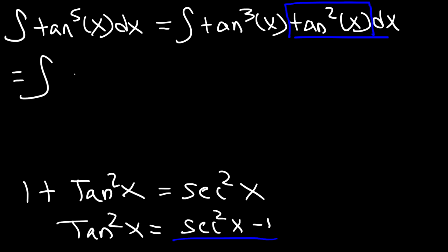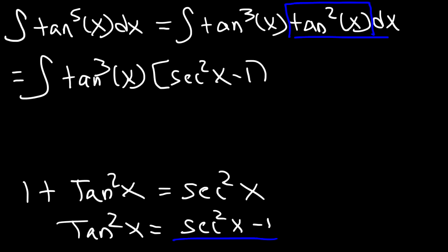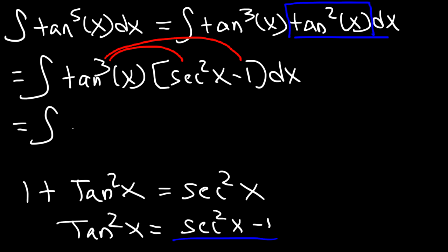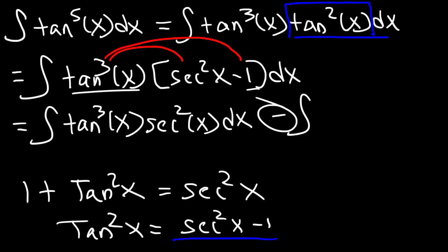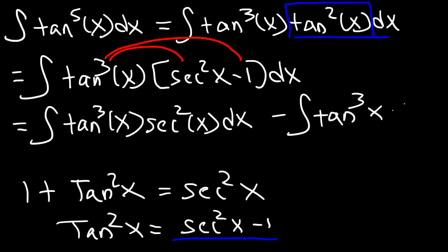So let's go ahead and replace tangent squared with secant squared minus 1. This gives us the integral of tangent to the third power times (secant squared minus 1). We're going to distribute tangent cubed to secant squared and to negative 1, and split the integral into two separate integrals: the integral of tangent cubed secant squared dx, minus the integral of tangent cubed dx.